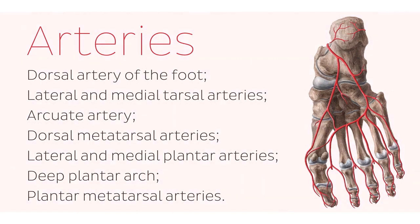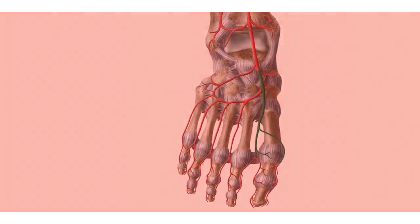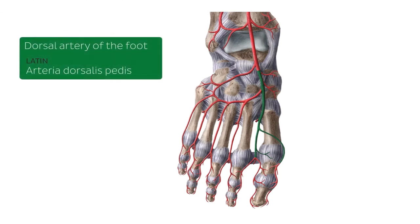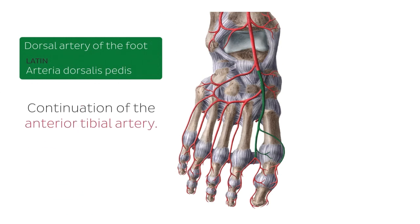Let's start off with the very first one here on our list, seen now highlighted in green. This is the dorsal artery of your foot, and the dorsal artery of the foot is the continuation of the anterior tibial artery coming all the way from the lower leg. The anterior tibial artery is the distal continuation of an important artery in the thigh and leg known as the femoral artery.